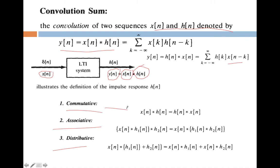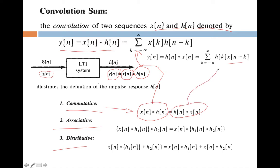The commutative property states that x of n convolution h of n is equal to h of n convolution x of n. For example, the convolution of x of n and h of n is written as summation k from minus infinity to plus infinity of x of k into h of n minus k. Similarly, convolution of h of n and x of n gives the same equation. Both are the same — you can take convolution of x of n and h of n or h of n and x of n.